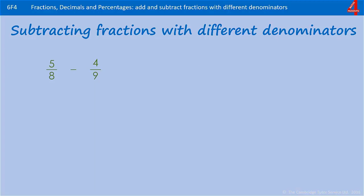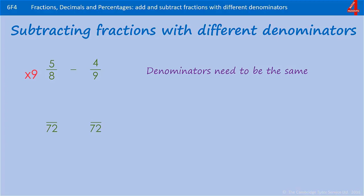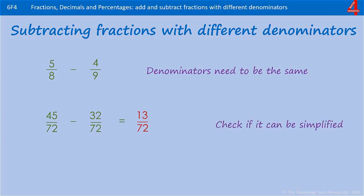Here's a subtraction for you to try — remember to make the denominators the same. Pause the video and have a go. We've used some bigger numbers this time. The lowest common denominator for 8 and 9 is 72. To get from 8 to 72 we multiplied by 9, so we multiply 5 by 9 to get 45. To get from 9 to 72 we multiplied by 8, so we multiply 4 by 8 to make 32. Now we can do the subtraction: 45 take 32 is 13. Just double check that 13 doesn't go into 72 — it doesn't, so we can't simplify it.